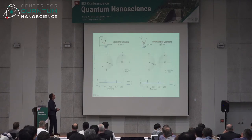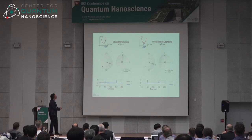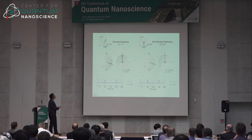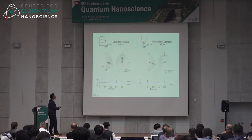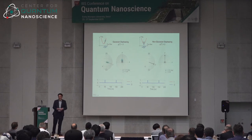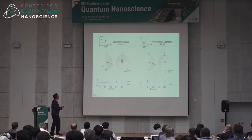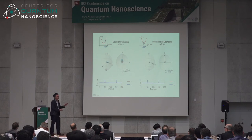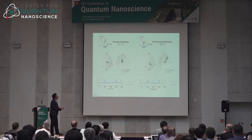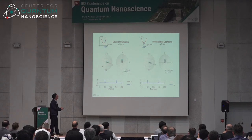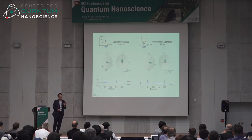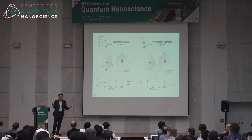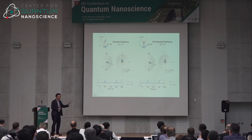Comparing simulations: for Gaussian dephasing with a two-pulse CPMG sequence, the Bloch vector always remains pointed along the y-axis — the phase doesn't change after refocusing, it just depolarizes. For non-Gaussian noise, however, the vector evolves and after refocusing it doesn't stop — it keeps going. This is manifestly due to non-Gaussian effects: dynamical decoupling pulses don't eliminate non-Gaussian noise. That's why it matters.